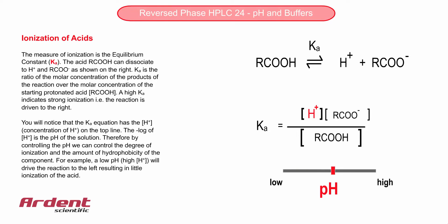The concentration of these components is represented by the square brackets. This is where the pH comes into play, because the pH is the negative log of the concentration of hydrogen ions. What this means is that when the concentration of hydrogen ions increases, the pH decreases.